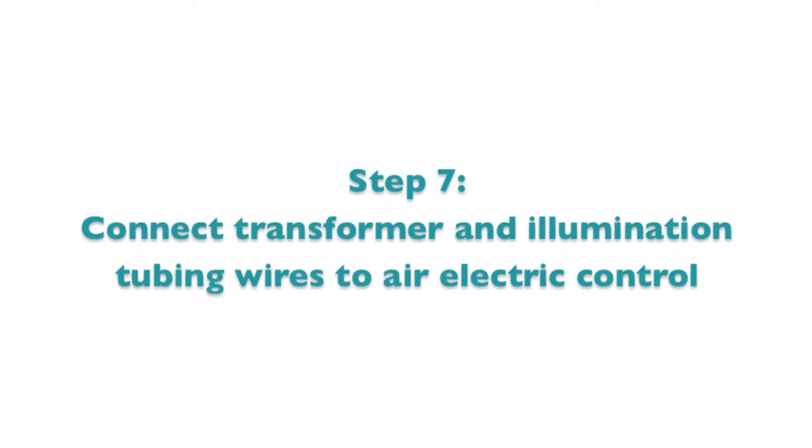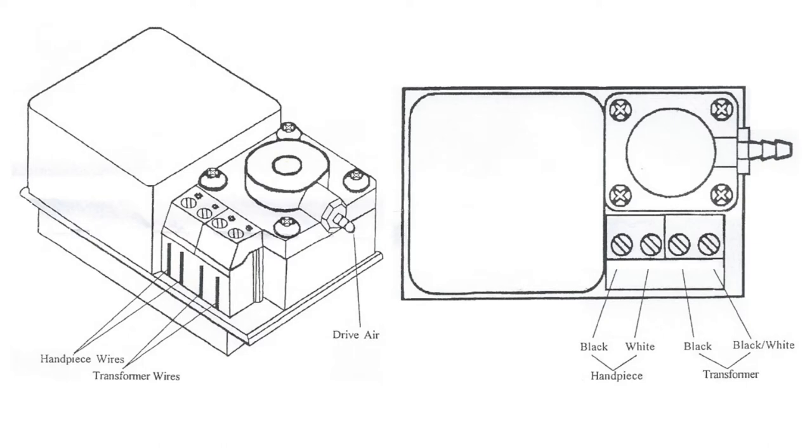It's time now to connect the wires from the illumination tubing and the transformer to the air electric control as shown in this diagram.